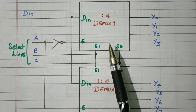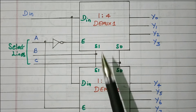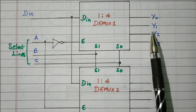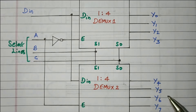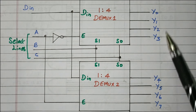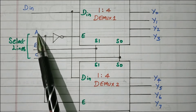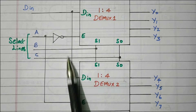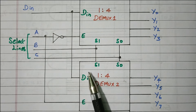This is the logic diagram. Demux1 is the first 1-to-4 demultiplexer and demux2 is the second 1-to-4 demultiplexer. The corresponding outputs are Y0, Y1, Y2, Y3 from demux1, and Y4, Y5, Y6, Y7 from demux2 — giving 8 total outputs for a 1-to-8 configuration. Din is connected to both demux1 and demux2 as the input signal.